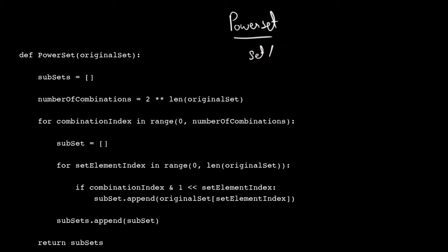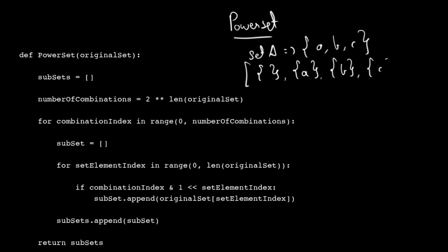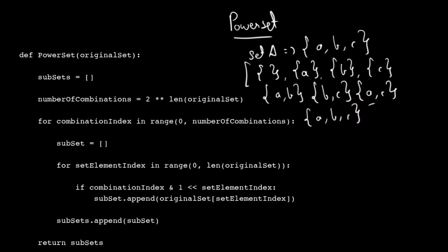So let's say you have a set A that contains elements a, b, and c. The power set of set A would look something like this: you'd have an empty set first — because the empty set is also a possible subset — then you have {a}, {b}, {c}, then combinations {a,b}, {b,c}, {a,c}, and finally {a,b,c} together. This is basically the power set of set A, and you can generate it by hand for any number of elements.